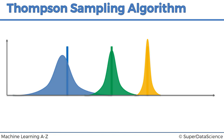That is pretty much how the Thompson Sampling algorithm works. As you can see, it is a probabilistic algorithm — every time we generate values, we create a hypothetical bandit setup, solve it, apply the results to the real world, and adjust our perception based on new information. In the next tutorial, we're going to compare the upper confidence bound and the Thompson Sampling algorithm. Until next time, happy analyzing!